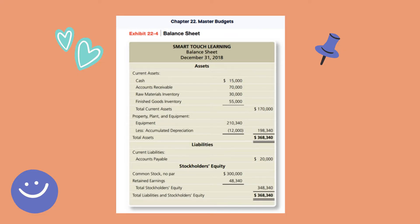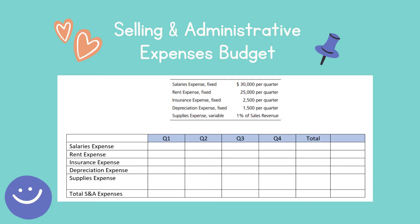This is the balance sheet at the end of 2018, so this is the beginning for 2019. Now let's prepare the selling and administrative expenses budget. In this budget we have salaries expense, rent expense, insurance expense, depreciation expense, and supplies expense.